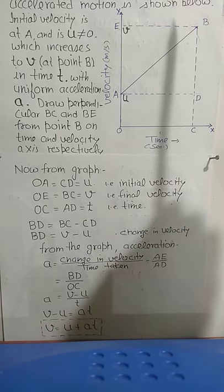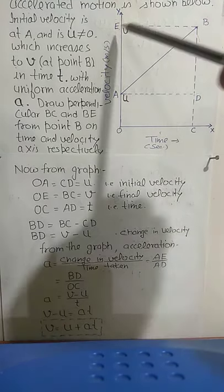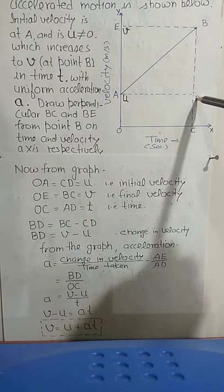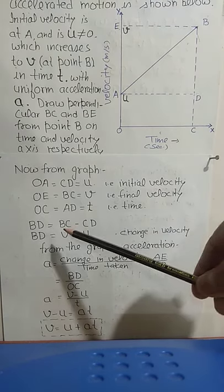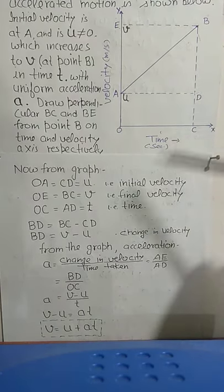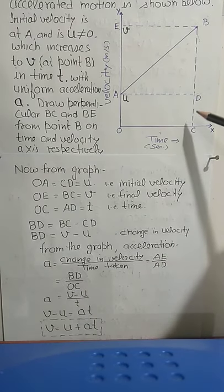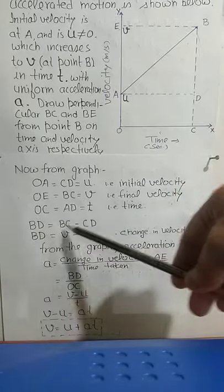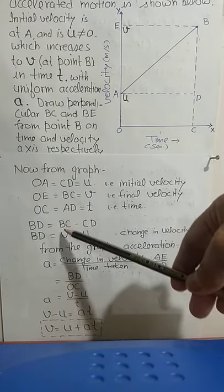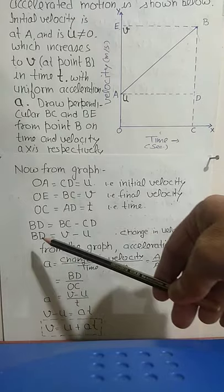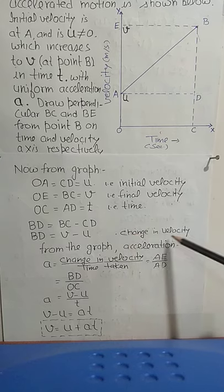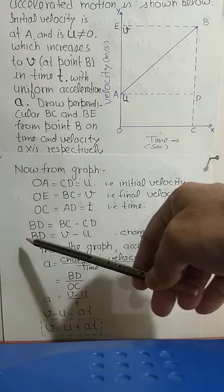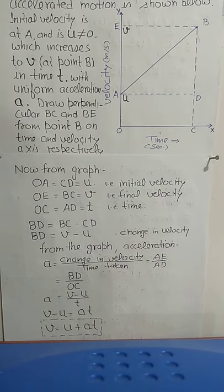At point D, velocity is U, and at point B, velocity is V. So B to D gives V − U, which is the change in velocity. BC is V and CD is U, therefore BD = BC − CD = V − U. So BD represents the change in velocity, which is final minus initial.